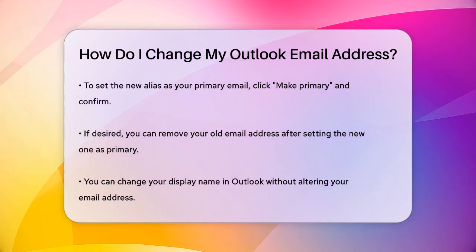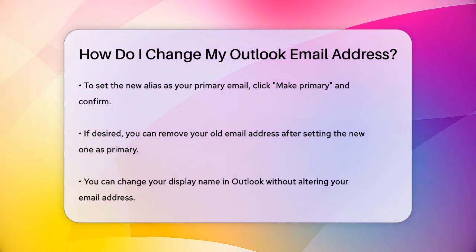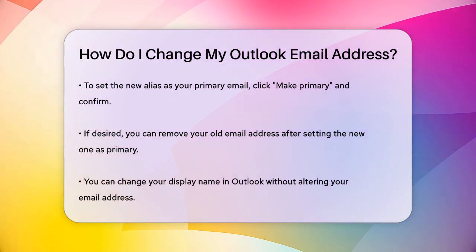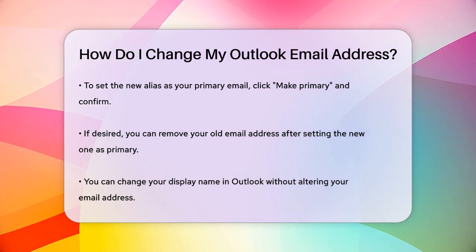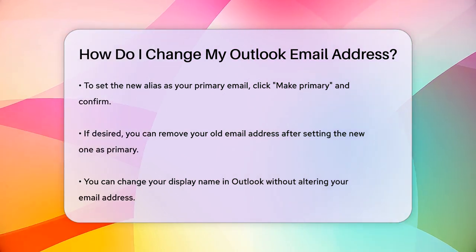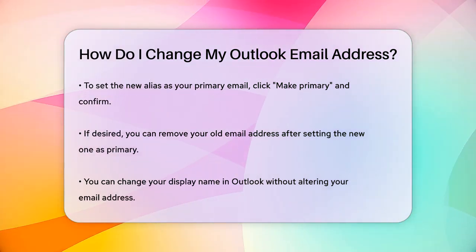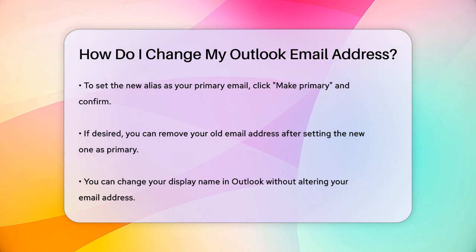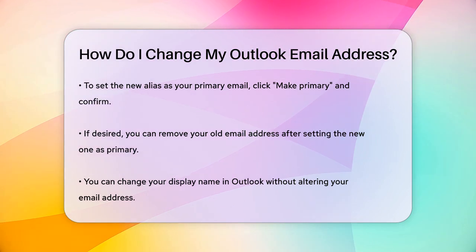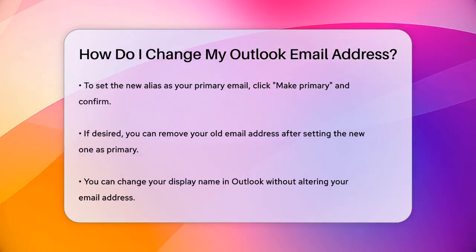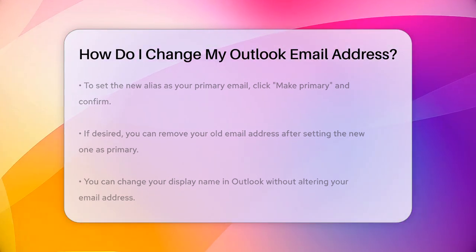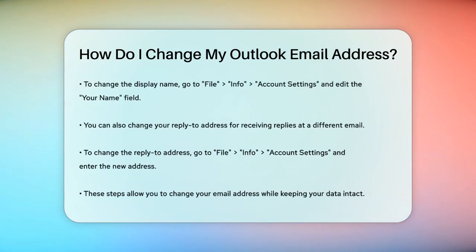Another option is to change your display name in Outlook, which doesn't change your email address, but changes the name people see when you send emails. To do this, open Outlook, go to File, Info, then Account Settings, and pick the email account you want to modify. Edit the Your Name field and click Next, followed by Done.